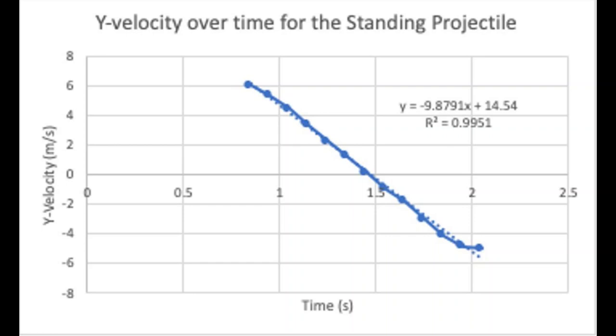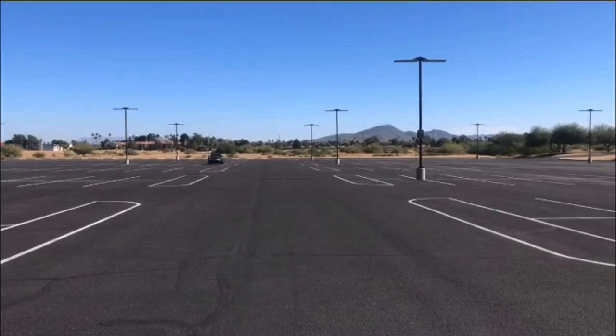We plotted our data points for vertical velocity versus time and determined the slope of the velocity graph to find the acceleration of the ball. The slope was equal to negative 9.88 meters per second squared, nearly identical to the magnitude of the freefall acceleration we expected.